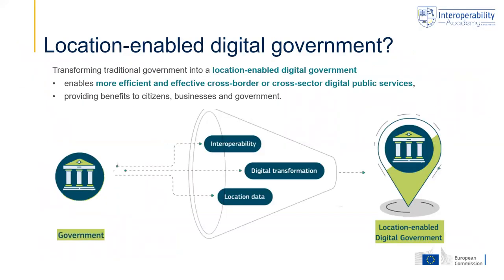The focus of this course is on the transformation from a traditional government to a more location-enabled digital government, which fully takes advantage of location data and technology to provide more effective, more efficient services, but also to take better decisions and implement better policies. This includes cross-border services and cross-sectoral services, all resulting in significant benefits to citizens, businesses, government, and society as a whole. For realizing this shift, we have identified three main building blocks: digital transformation, location data and technologies, and interoperability — and location interoperability in particular.